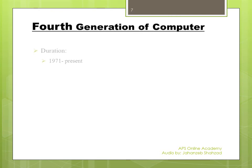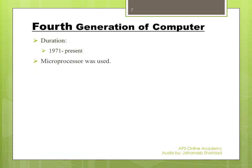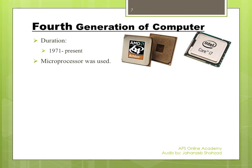Fourth generation of computers: the time duration for the fourth generation is 1971 to the present, which means computers being used nowadays are known as fourth generation computers because they all use the same technology invented at the start of 1971. A microprocessor is used in these computers — it is a very small chip that contains millions of IC chips in a single microprocessor chip.